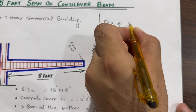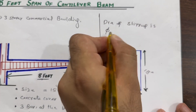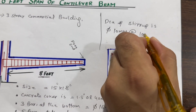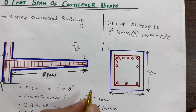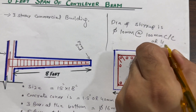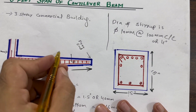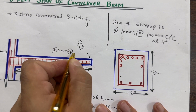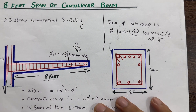The diameter of the stirrup is 10 millimeters with a spacing of 100 millimeters center to center — which you can also say is 4 inches. You can see clearly these are the stirrups: 10 millimeter diameter with 100 millimeter center-to-center spacing.